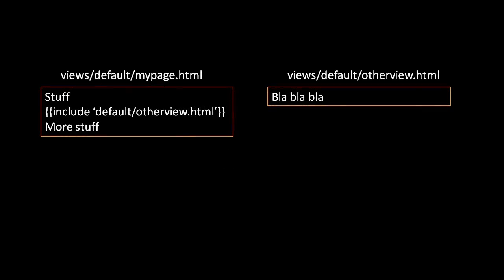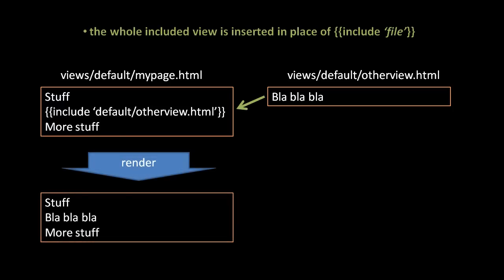If you see an include directive without any file path, that's used in conjunction with the other directive called extend. When the include directive specifies a file path, we have two separate view files — for example, mypage.html and otherview.html. In the mypage view there's an include directive specifying a relative path (relative from the views directory) pointing to otherview.html. The effect is that the content of otherview.html gets inserted in place of where the include directive was.